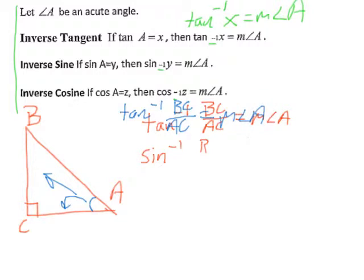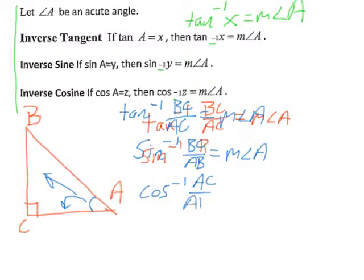You have these buttons on your calculator too. The inverse sine of the opposite over the hypotenuse — that's BC over AB — equals the measure of angle A. And the inverse cosine of AC over AB equals the measure of angle A. This is the formulaic approach: plug the values in and you'll get angle A every time.